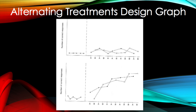These next two example graphs show no difference between treatments. The top graph shows that neither intervention demonstrated control over the dependent variable.